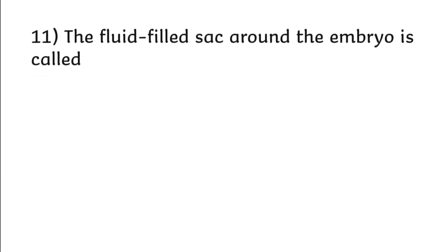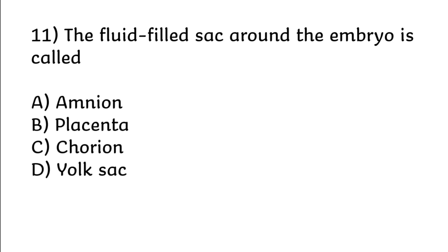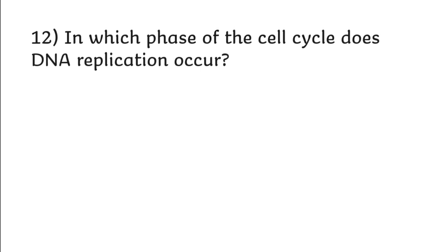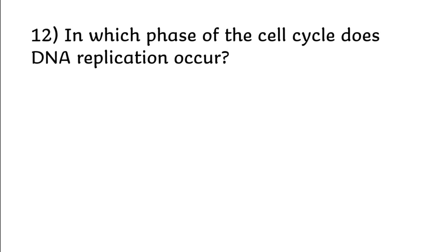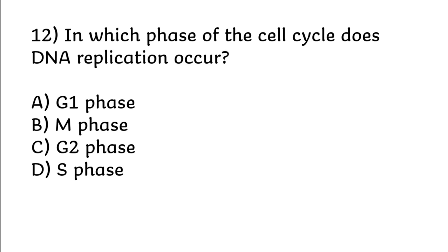The fluid-filled sac around the embryo is called: amnion, placenta, chorion, yolk sac. Correct answer is option A: amnion. In which phase of the cell cycle does DNA replication occur? Options: G1 phase, M phase, G2 phase, S phase.